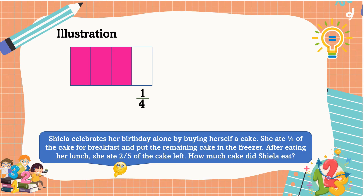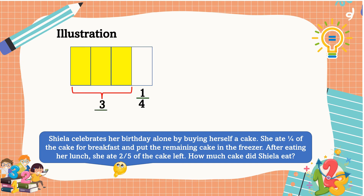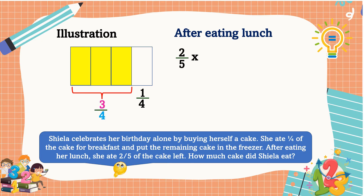How many slices are left? Let's count: one, two, three — yes, there are three slices left out of four parts. So the remaining cake is three-fourths. After eating lunch, she ate two-fifths of the remaining cake. The question is: how much cake did Shella eat?